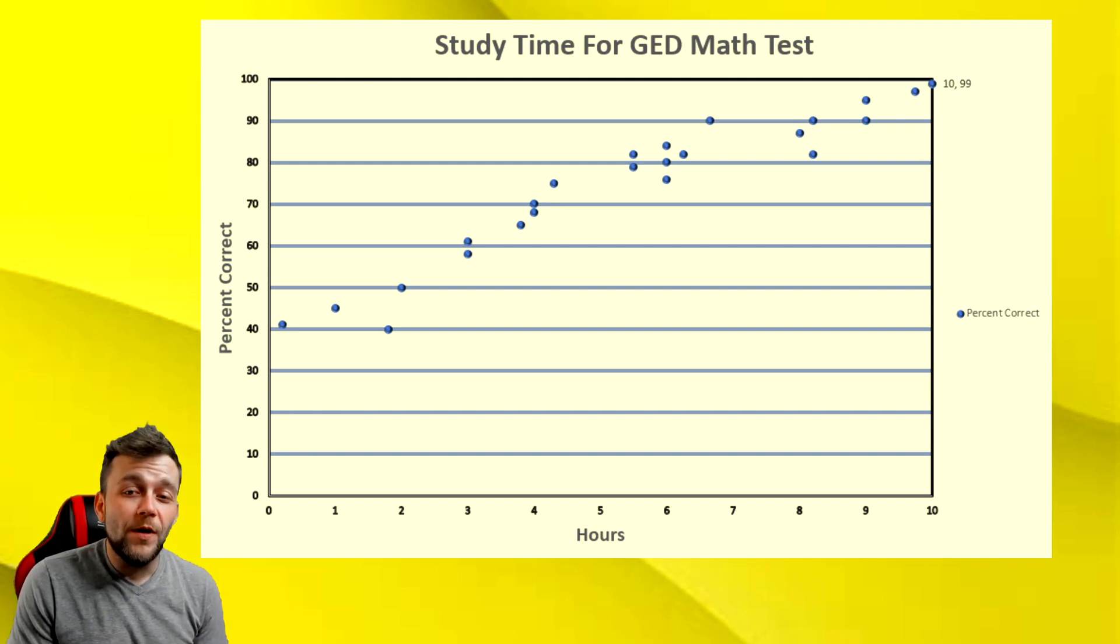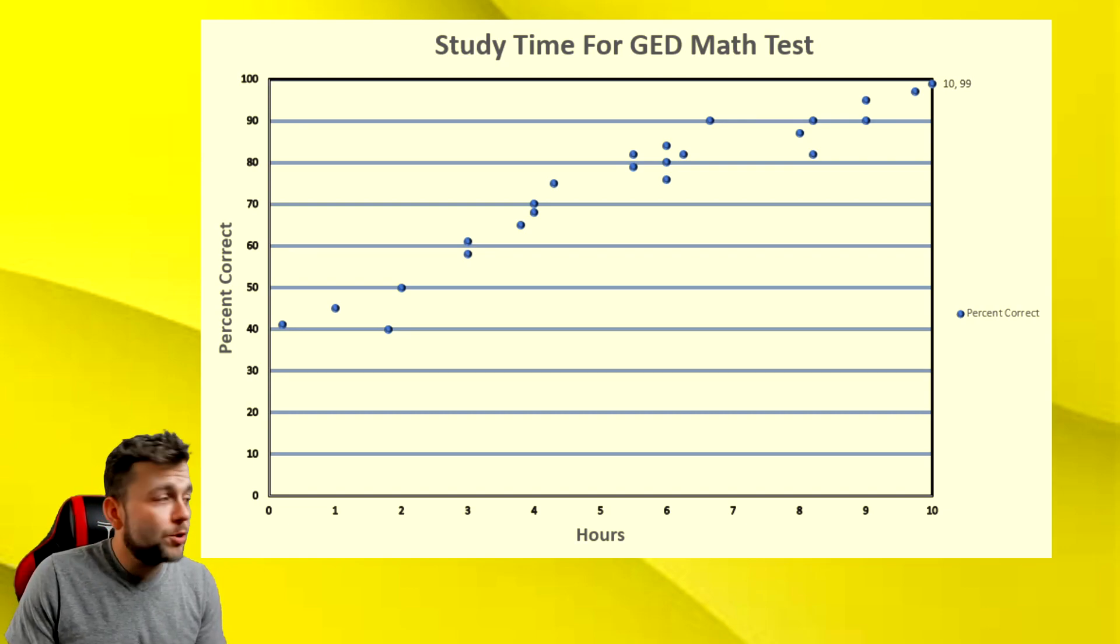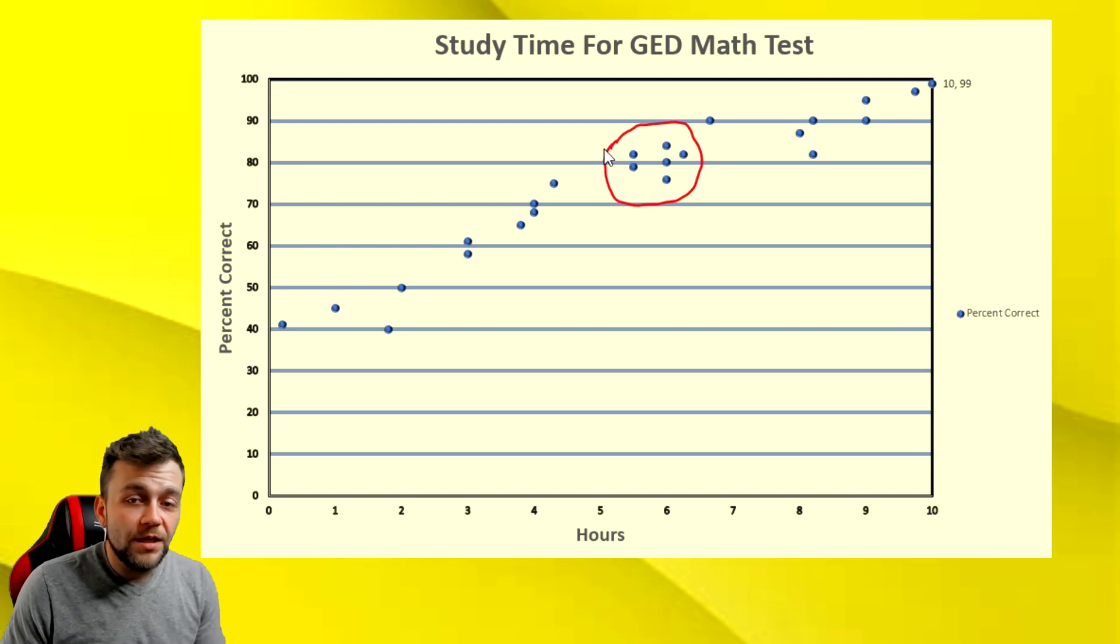What you'll most likely run into on the GED when you're looking at any type of graph are questions in regards to, like in this one, they're going to ask you, how many hours do you have to study to get a certain type of score? So let's just kind of go through that. How many hours would you have to study to score an 80 percent?